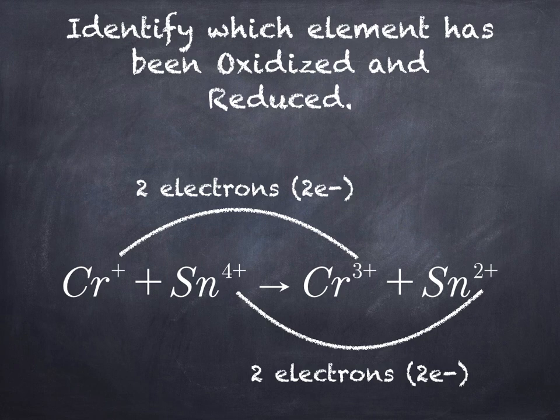So it looks like our chromium is transferring the electrons, they're coming from the chromium, and then they're going to the tin.